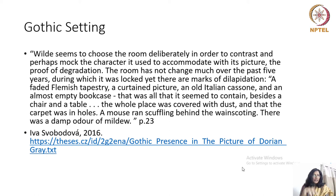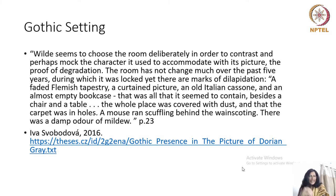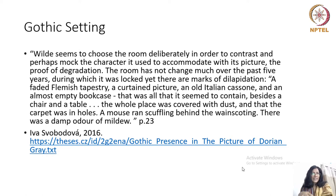According to the critic, this room was chosen specifically by Dorian to make a point — he wants to contrast his old personality with his present personality. Therefore, he chose to house his portrait in this old schoolroom, which contains marks of dilapidation. It is not a well-maintained room; it is full of dust. The description says the whole place was covered with dust and we also have holes in the carpet.